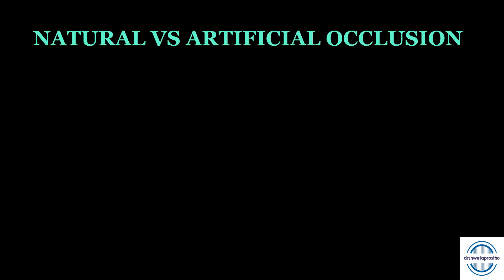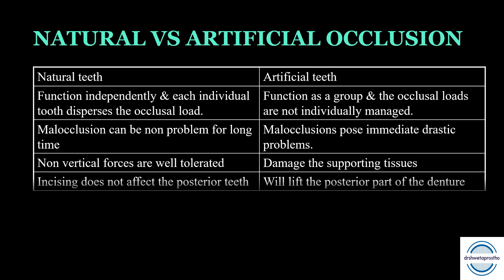Now let us compare the natural teeth occlusion with the artificial occlusion — this comes as a short note in the theory exam also. Each natural tooth functions independently and disperses the occlusal load, while in artificial teeth or a denture they function as a group and occlusal loads are not individually managed. Second, malocclusion if present in natural teeth may not cause problems for a long time, but malocclusion in a denture may pose immediate drastic problems. Third, non-vertical forces are well tolerated by natural teeth, but in a denture they may damage the supporting tissues or cause dislodgement of the denture.